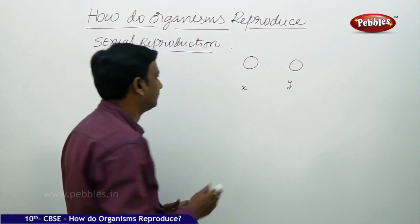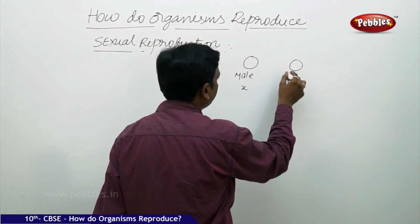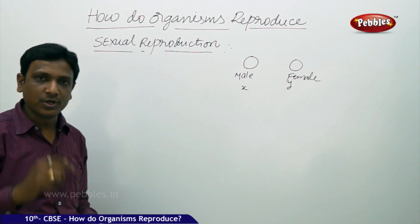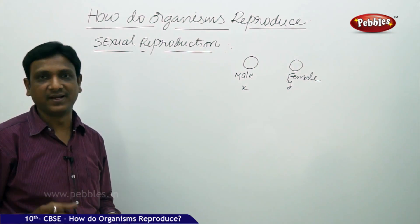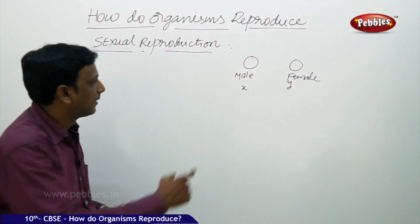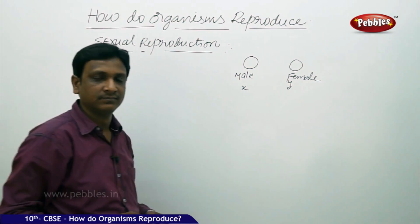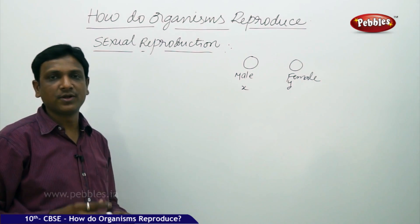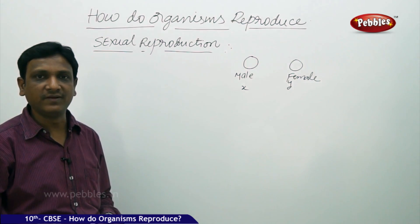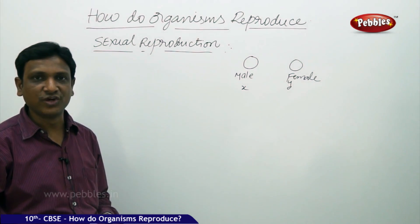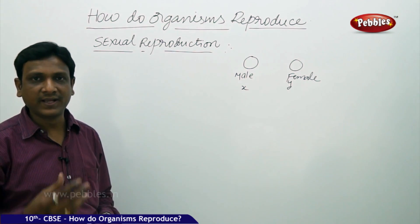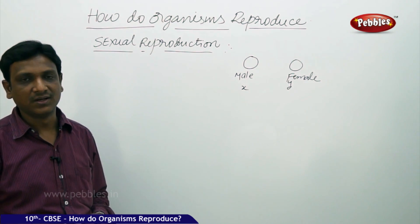What is the gender? Male and female. So sexual reproduction is possible by two organisms, not of the same gender — two different genders, male and female. Also, sexual reproduction is not possible between various species. It is possible only between two organisms, one male and one female, of the same species. Organisms of the same species are able to reproduce.